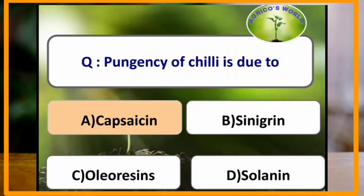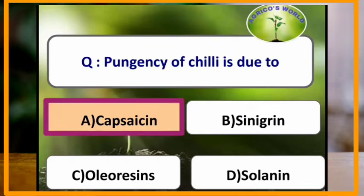Pungency of chili is due to which of the following? Pungency of chili is due to the presence of capsaicin.